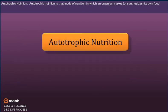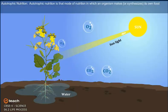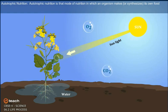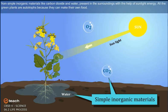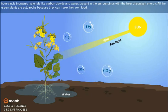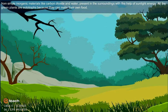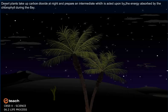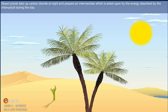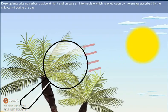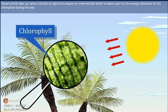Autotrophic nutrition is that mode of nutrition in which an organism makes or synthesizes its own food from simple inorganic materials like carbon dioxide and water present in the surroundings, with the help of sunlight energy. All the green plants are autotrophs because they can make their own food. Desert plants take up carbon dioxide at night and prepare an intermediate which is acted upon by the energy absorbed by the chlorophyll during the day.